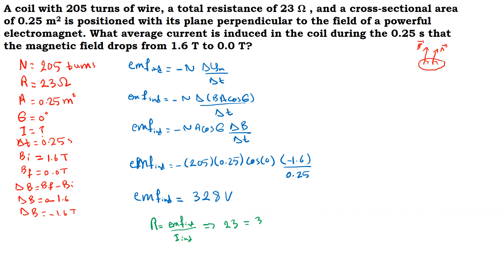R is equal to EMF induced over I induced, which means that 23 is equal to 328 over I induced.